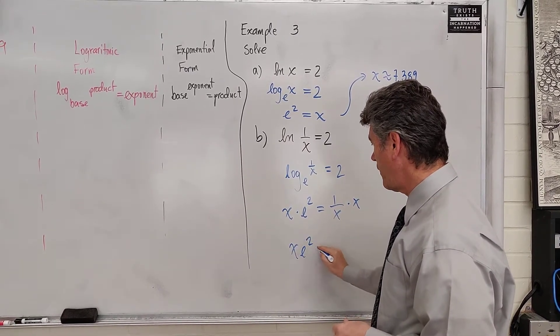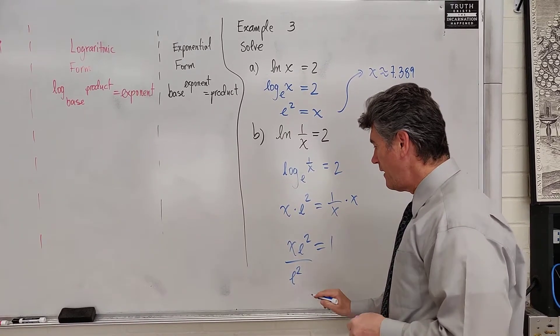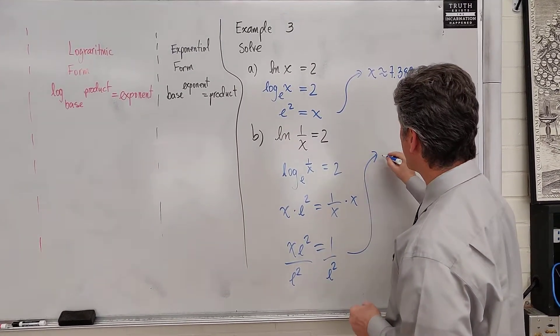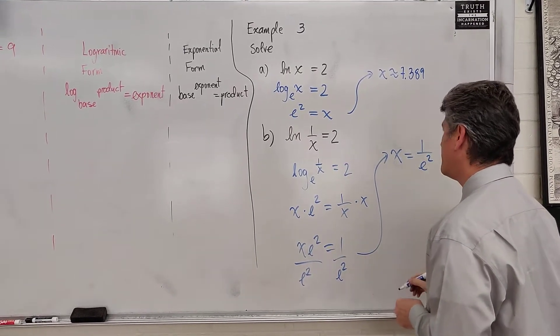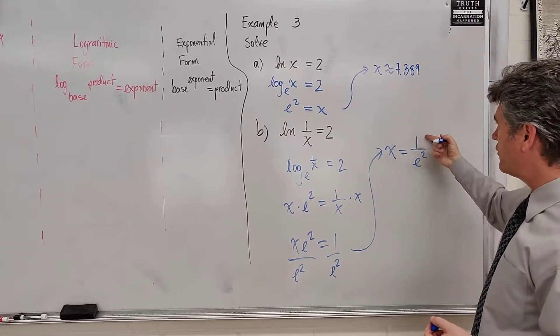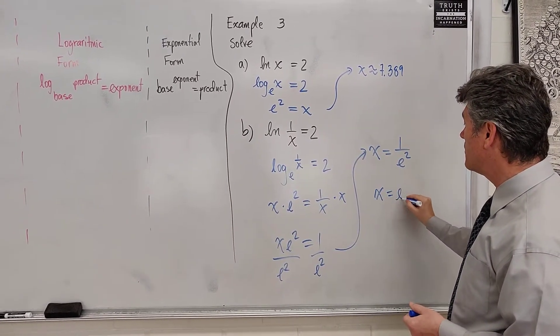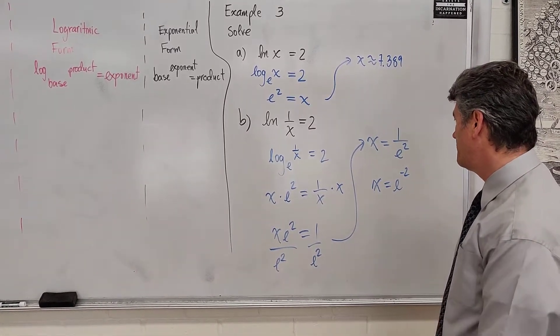x e squared is equal to 1. If you are frightened, don't be. Divide by e squared on both sides, and get x is equal to 1 over e squared. Take your graphing calculator and do 1 divided by e squared. Or you can even do e raised to the power of negative 2.